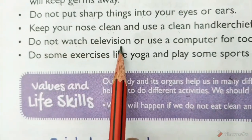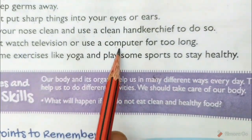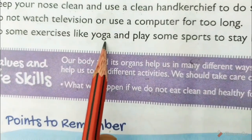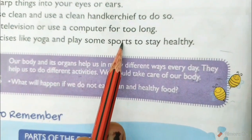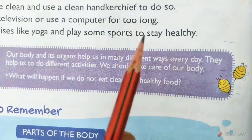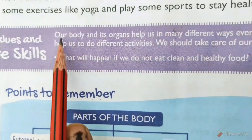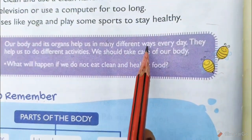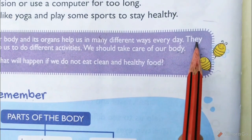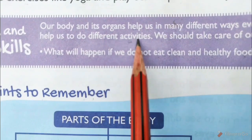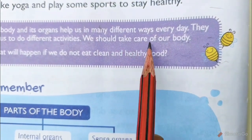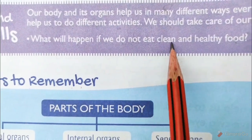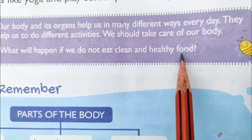Do not watch television or use a computer for too long. Do some exercises like yoga and play some sports to stay healthy. Values and life skills: our body and its organs help us in many different ways every day. They help us to do different activities. We should take care of our body. What will happen if we do not eat clean and healthy food? Write your answer in your own words.